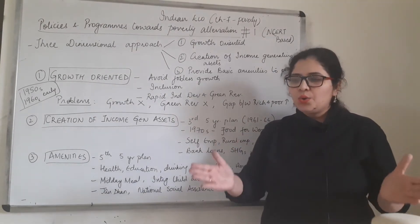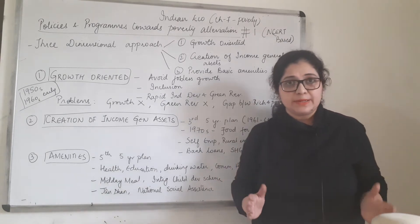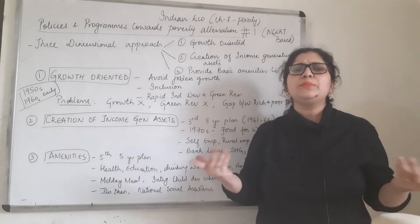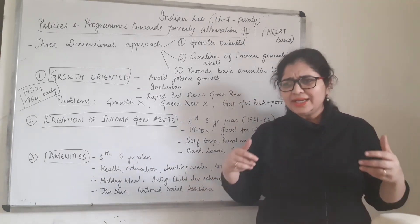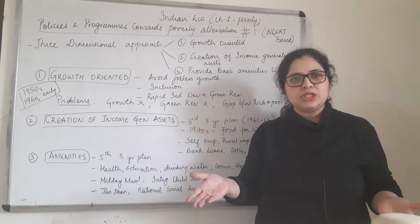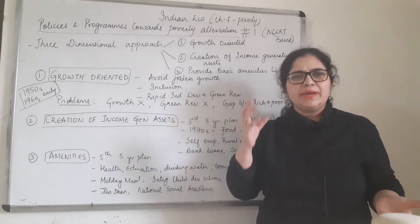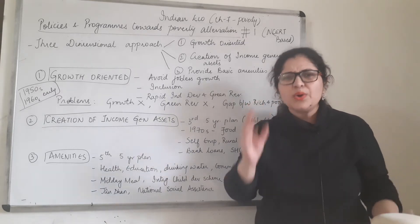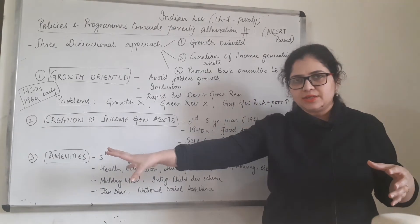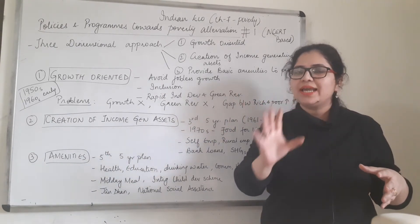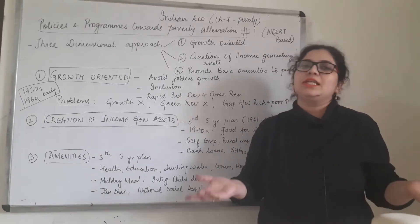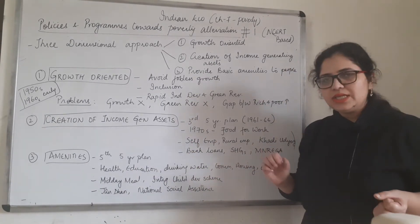Schemes like MGNREGA were introduced, where a guaranteed livelihood was provided for 100 days, so that people get an ecosystem where they can work. Going forward, from 2014 onwards, we've had Startup India — do your own work, generate employment for yourself and for thousands of other people. The government released policies and support mechanisms because it understands that it cannot do everything — it will give you an ecosystem and you will create employment for yourself, benefiting both you and others.